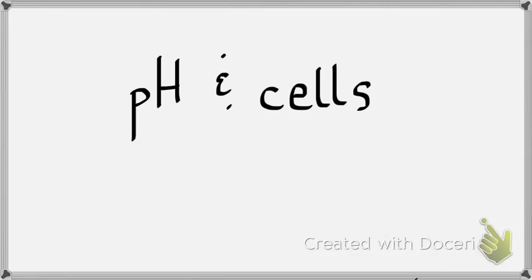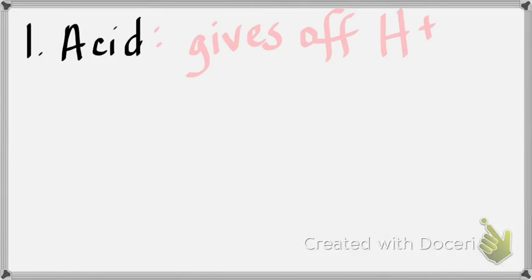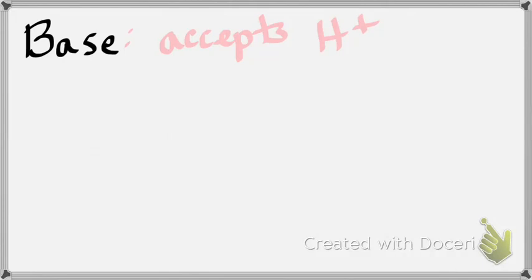Lastly, we have a little bit about pH. Your choices are acid, base, or buffer. A substance that accepts hydrogen ions — that's a base. A substance that gives away hydrogen ions — that's an acid. Acids give off hydrogen ions, bases accept them. A hydrogen ion is H with a plus sign.